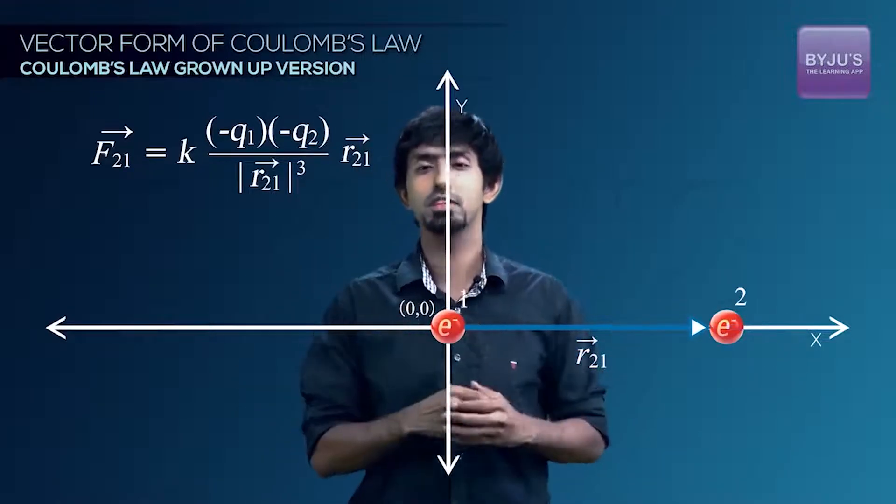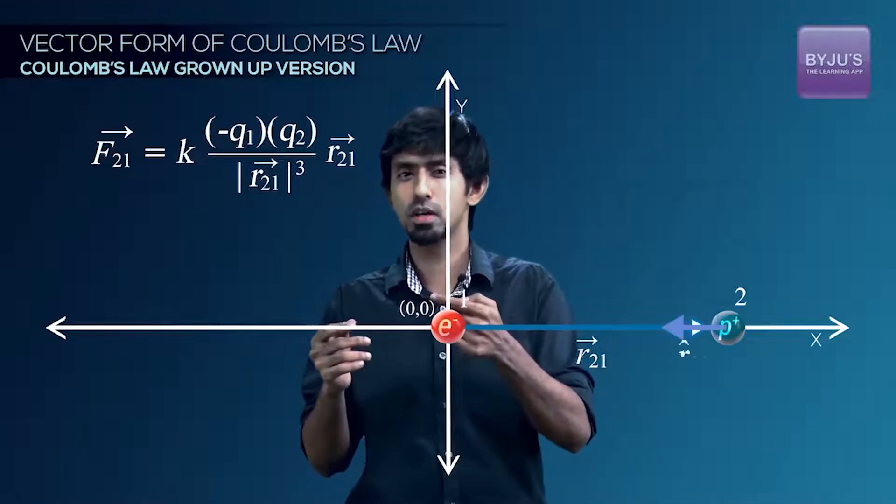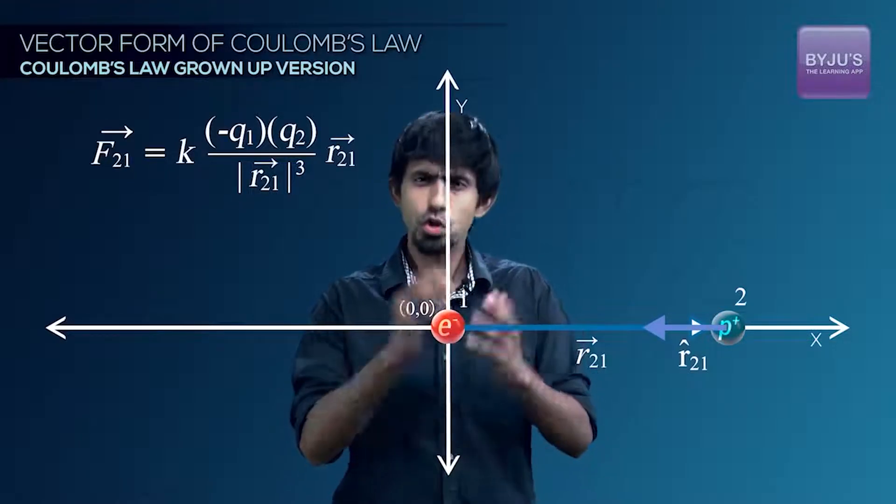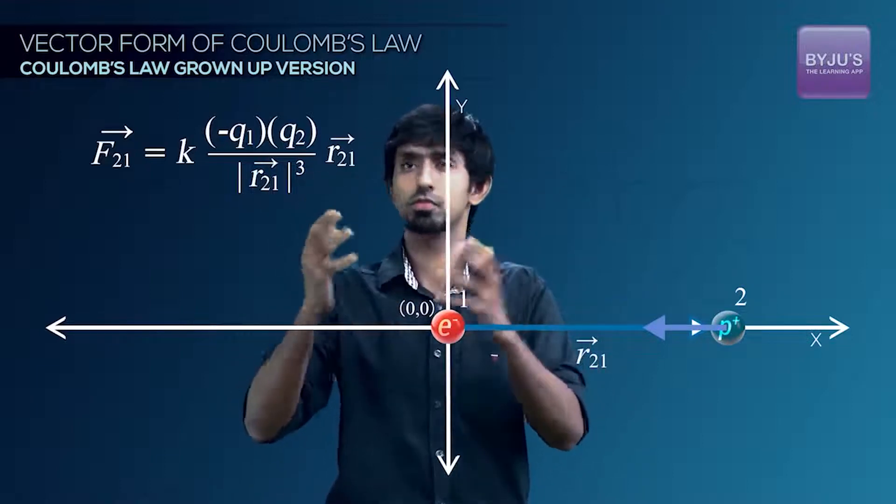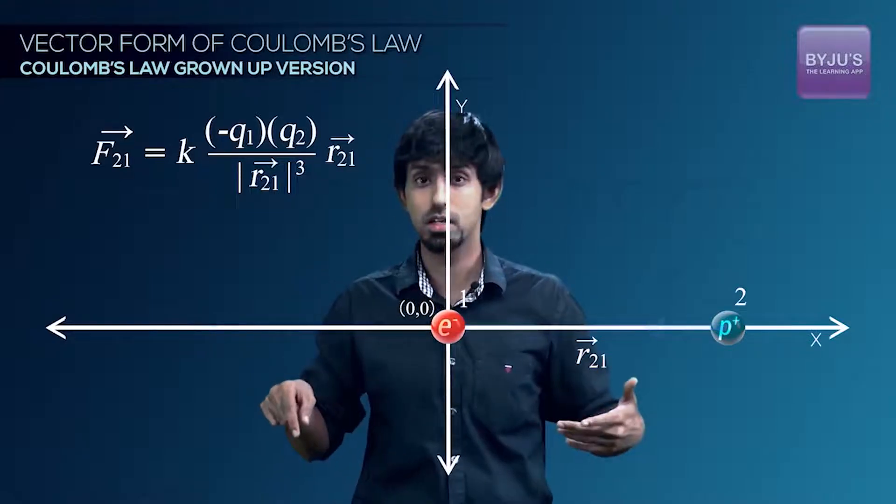And if it's positive and negative, then you predict that the answer, the vector you get is going to have a direction opposite to that of R21 vector because minus into positive is negative, which also makes sense because if these two are of opposing signs, our assumption for the model of electrostatics says that these two will attract. So you're expecting that charge to feel a force towards the other charge.